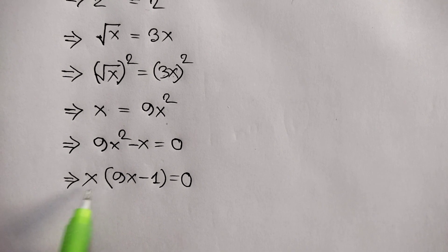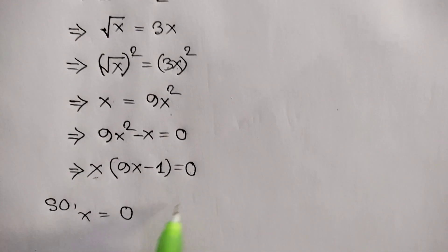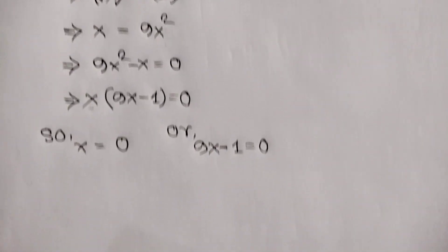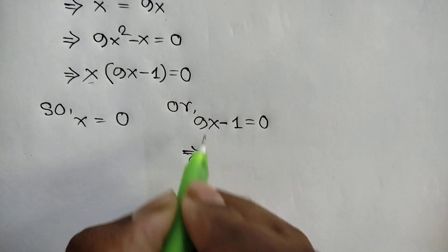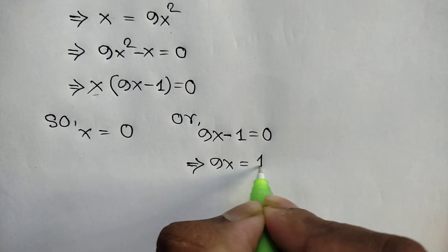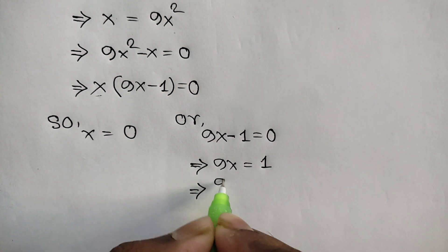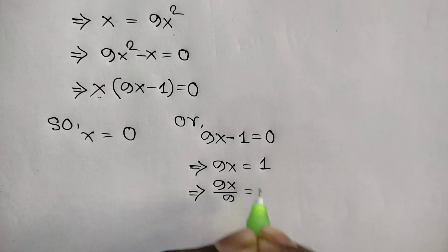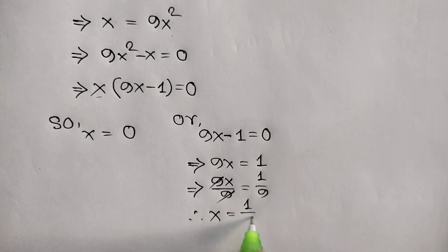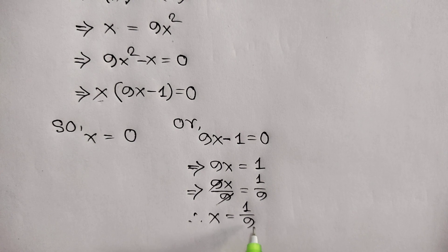Here there are 2 cases: x is equal to 0, and 9x minus 1 is equal to 0. From the second case, 9x is equal to 1, so dividing both sides by 9, we get 9x over 9 is equal to 1 over 9, and this 9 cancels, so x is equal to 1 over 9. So we get 2 values: 0 and 1 over 9.